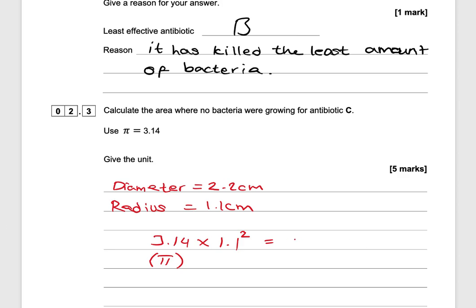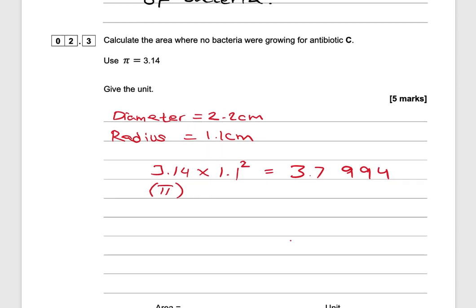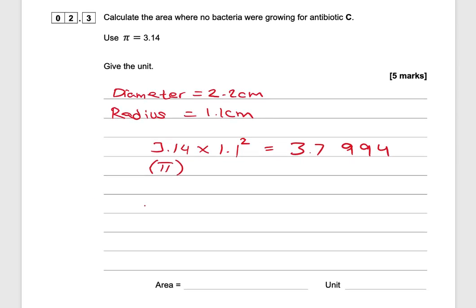Typing that into your calculator gives an answer of 3.7994. So the area is 3.7994. We've used centimetres and worked out the area, so the units are centimetres squared.